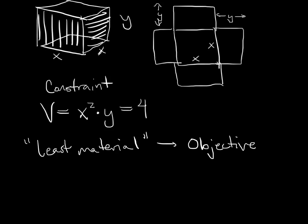So, the material is going to consist of one square base, and one, two, three, four sides, each of which has area x times y. So, each of these guys is x times y. So, surface area, we'll call it, is going to be x squared plus 4xy.